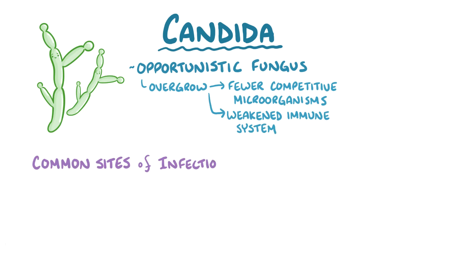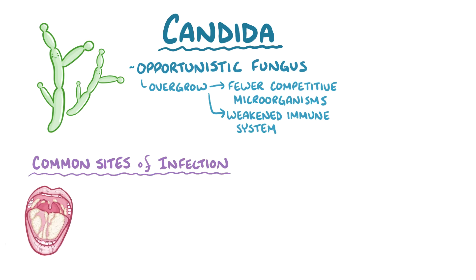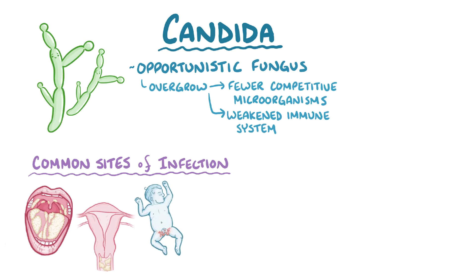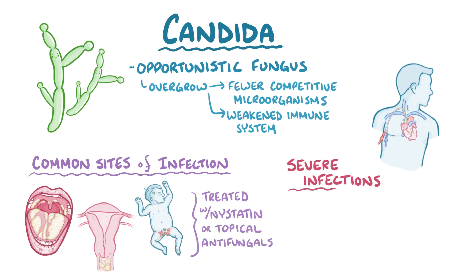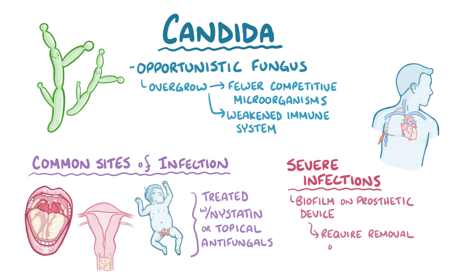Common sites of infection include the mouth, the esophagus, the vulvovaginal region, and the groin in infants. These superficial infections are usually treated with nystatin or topical antifungals. Severe infections include those where a biofilm forms over a prosthetic device, and typically require removal of the infected device.